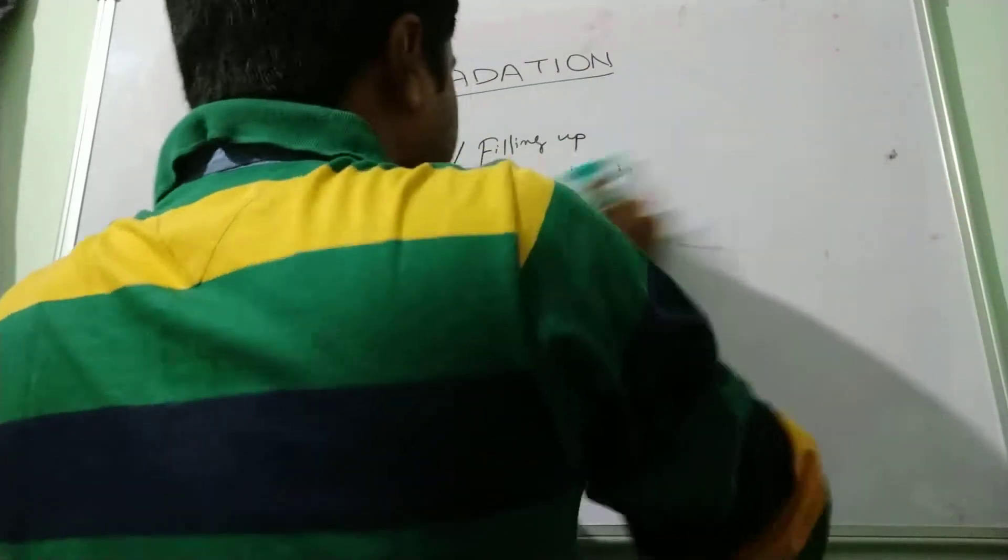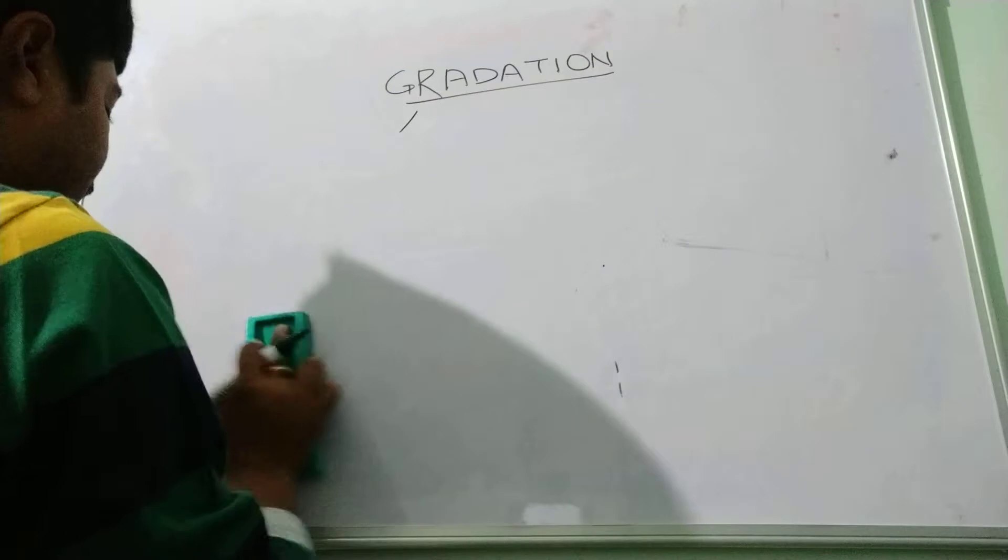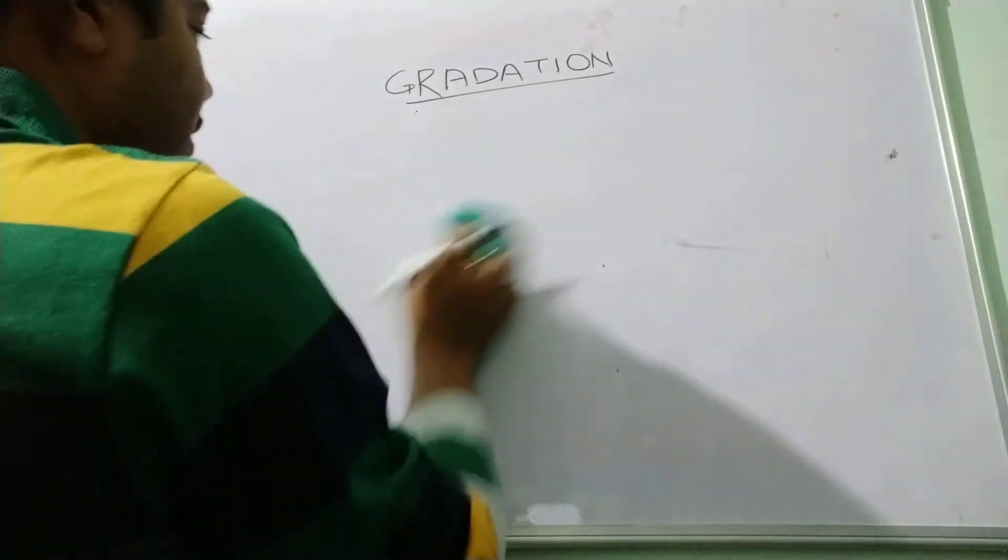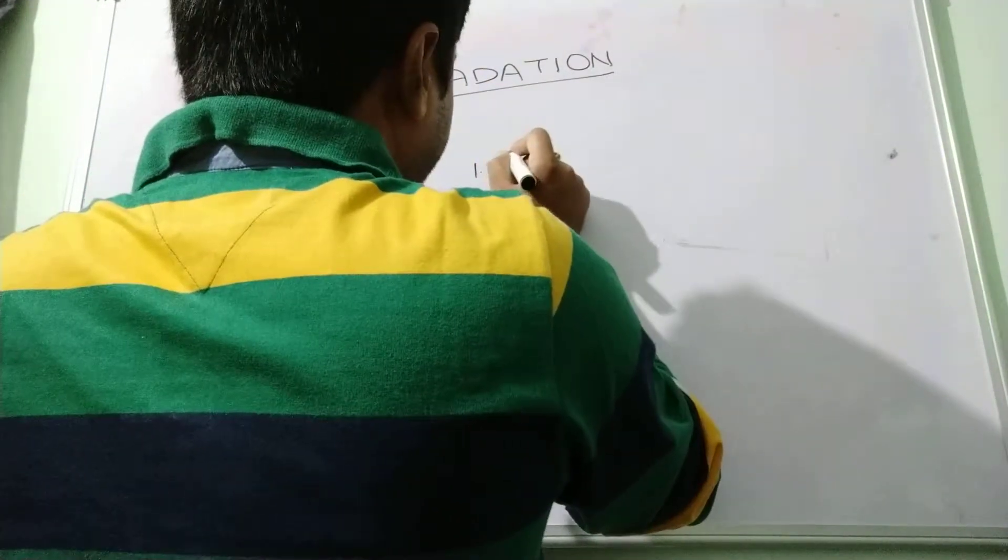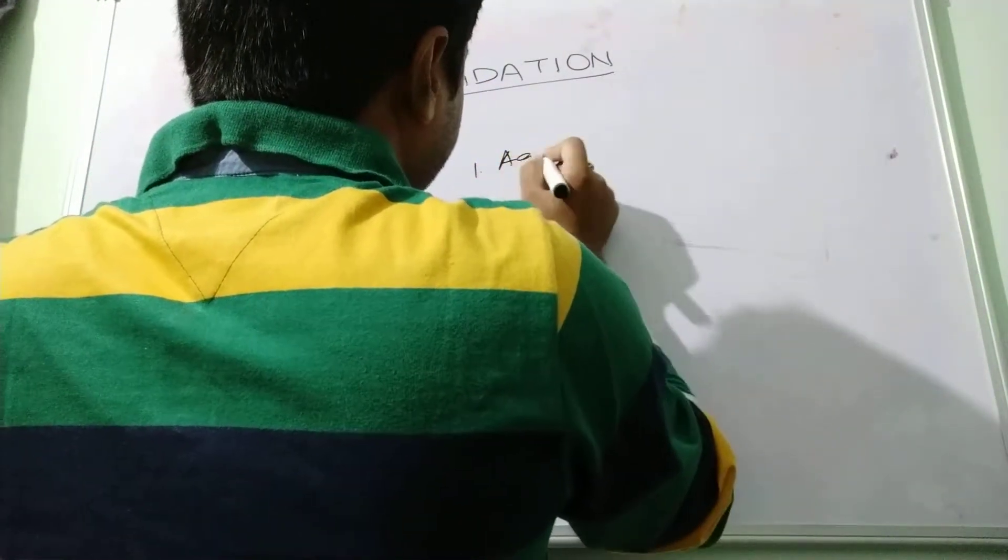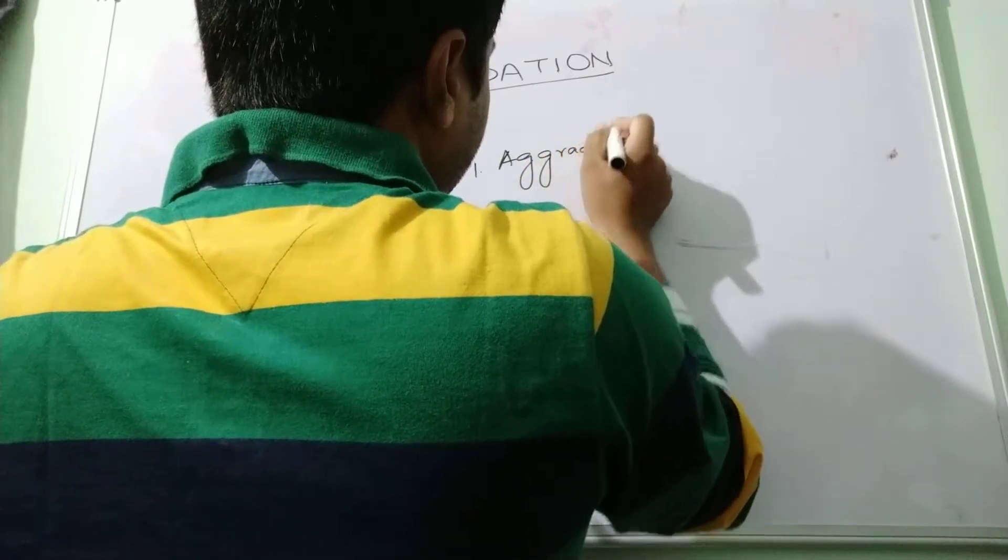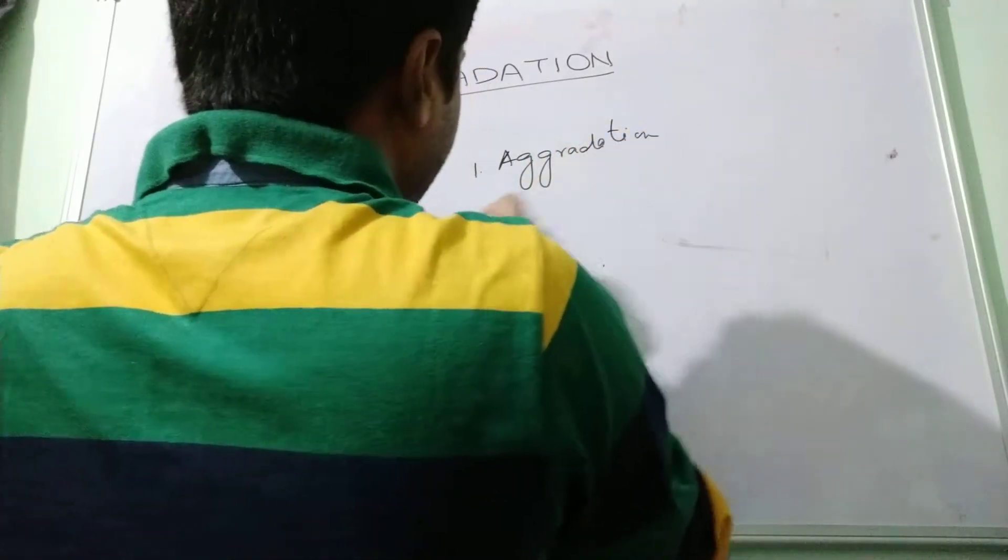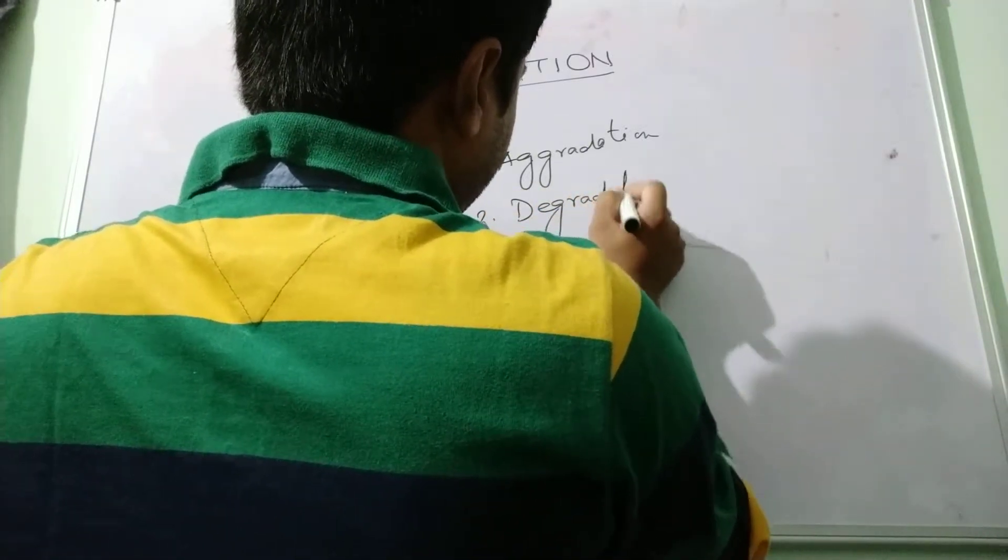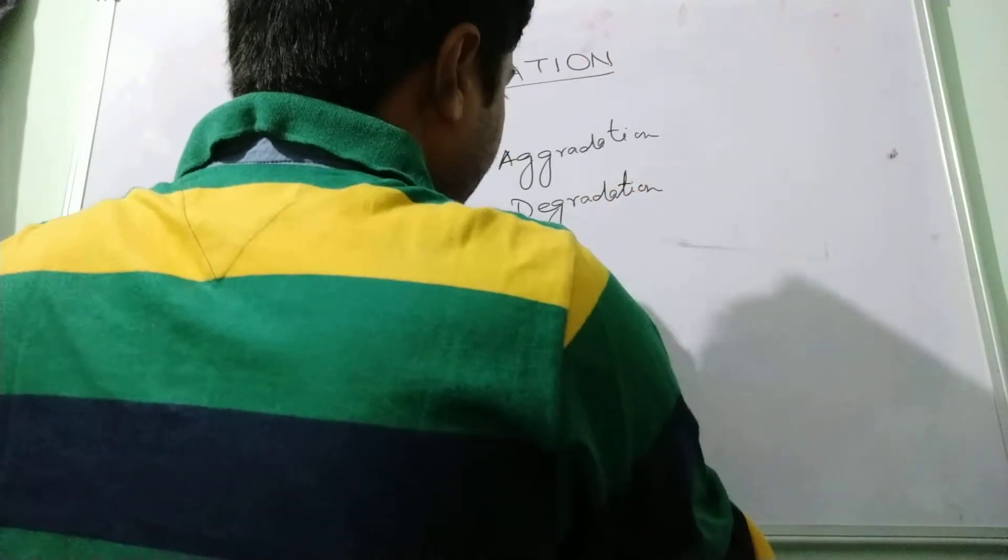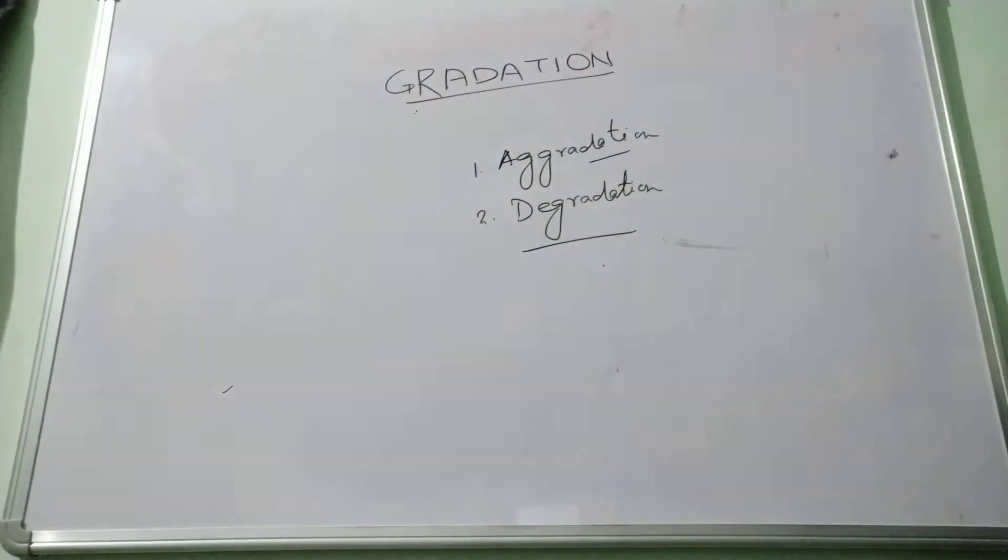Now Thornbury divided this gradation process into two important categories. One is known as aggradation, and the second one is degradation. So this gradation process is divided into two categories: aggradation and degradation.